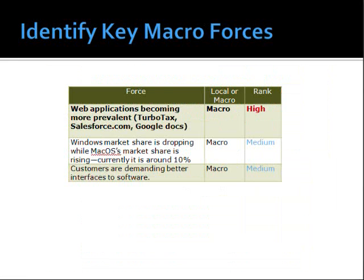After that, I wanted to look at key macro forces. Macro forces are forces that are outside the problem domain specifically. Macro forces that I've seen were web applications becoming more prevalent — look at features from TurboTax, Salesforce.com, Google Docs. Also, Windows market share is dropping while macOS' share is rising. Currently, macOS is on about 10% of desktops, and customers are demanding better interfaces from software. That's not going to change.